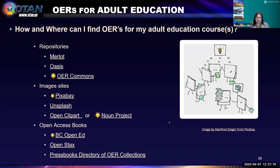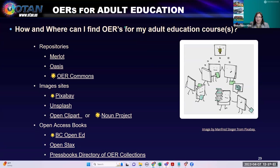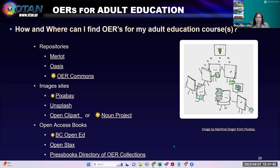For open access books, there's BC Open Ed — whenever you see BC, it's British Columbia; they are huge OER writers and advocates, and it's probably a great resource for adult ed or continuing ed. Open Stacks has a lot of K–12 and general ed books, which could be great for GED programs. Press Books Directory of OER Collections has beautiful books, especially in the humanities — art, history — though they have other topics as well.